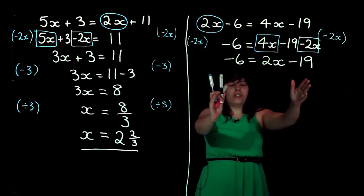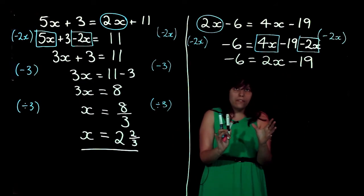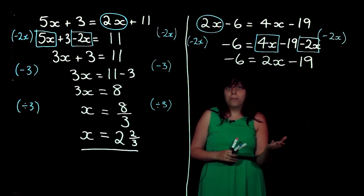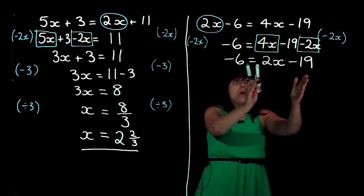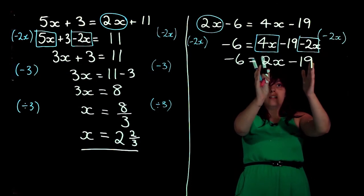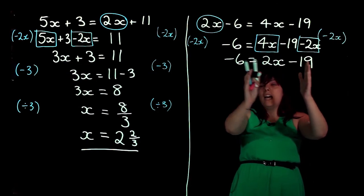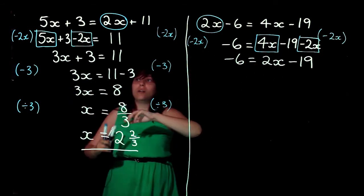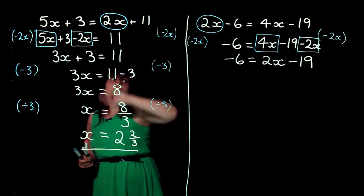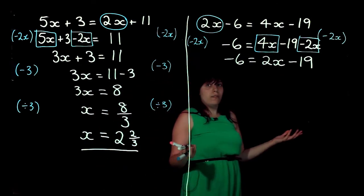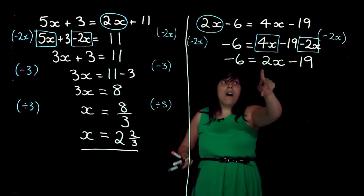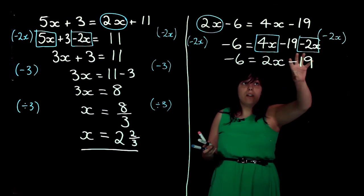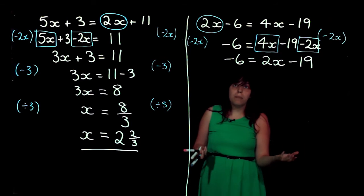Now, this equation is in a slightly different form to the ones that we've been looking at so far. This time, we've got the 2x minus 19 on this side, and the answer on that side. Whereas, if you look back at this example, we had the answer on the other side. But it doesn't make any difference, because our x is in the front of this side. So, we've got our x, and then our constant. So, we can still do exactly the same thing.